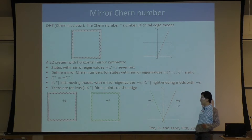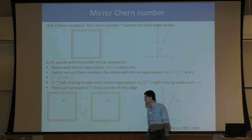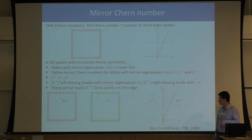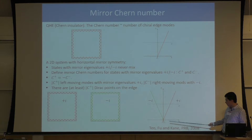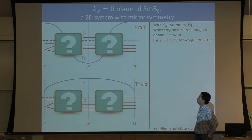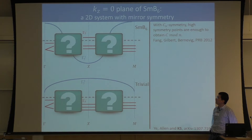The mirror Chern number tells us how many Dirac cones we have at the edge. The dispersion relation for edge states with opposite mirror eigenvalues have opposite slopes — one moving left and one moving right — and when they cross, they form a Dirac point. These Dirac points cannot be gapped because the two states have different symmetry. For SMB6, we can't directly apply this because it's 3D, but we can treat the k_z = 0 plane in the Brillouin zone as a 2D system with mirror symmetry.